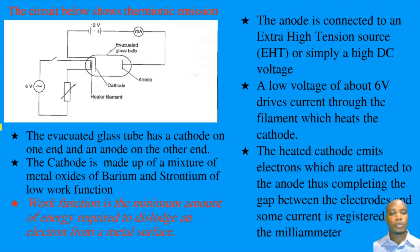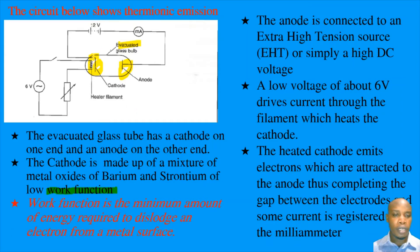Let us look at the circuit which can be used to demonstrate thermionic emission. In the circuit we have an evacuated glass tube. On one end we have a cathode and on the other end we have the anode. The cathode is normally made out of a mixture of metal oxides of barium and strontium of low work function. Work function is the minimum amount of energy required to dislodge an electron from a metal surface.